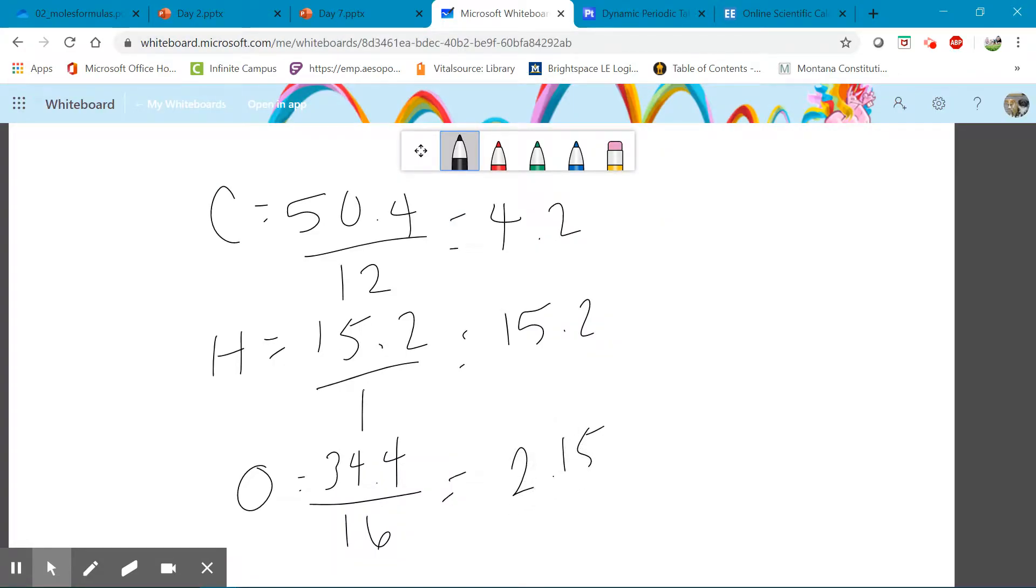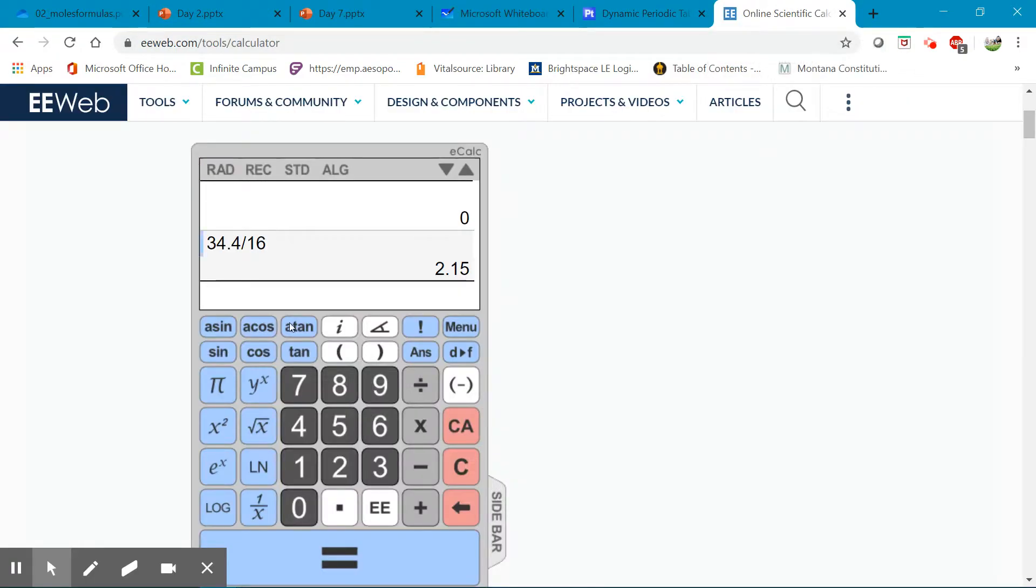So then our next step is trying to figure out a whole number ratio of these elements based off their percentages. All you simply have to do is see which value is the lowest and divide the rest of them all by that. So 2.15 is our lowest. We would divide everything by 2.15 and figure out what those are, if they're whole numbers. Now you do have to do some rounding, but it's not too bad.